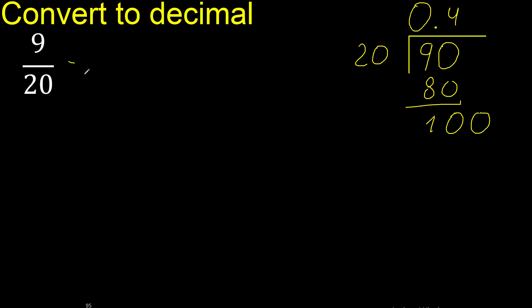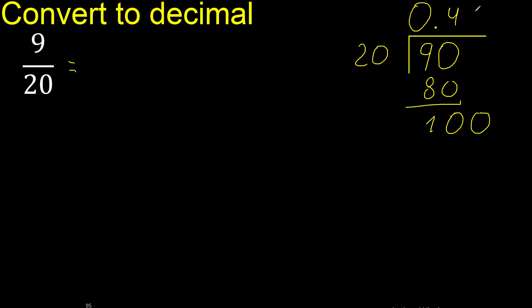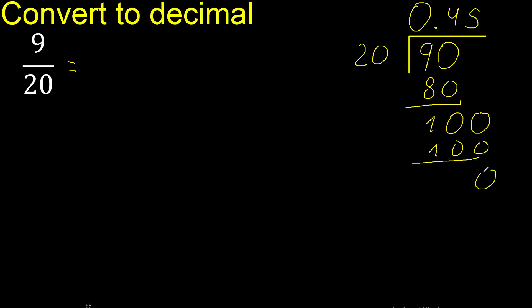The point is here — now we have 100. 20 multiplied by which number? 20 multiplied by 5 is 100, which is exact. Subtract: 100 minus 100 is 0. Therefore we finish.